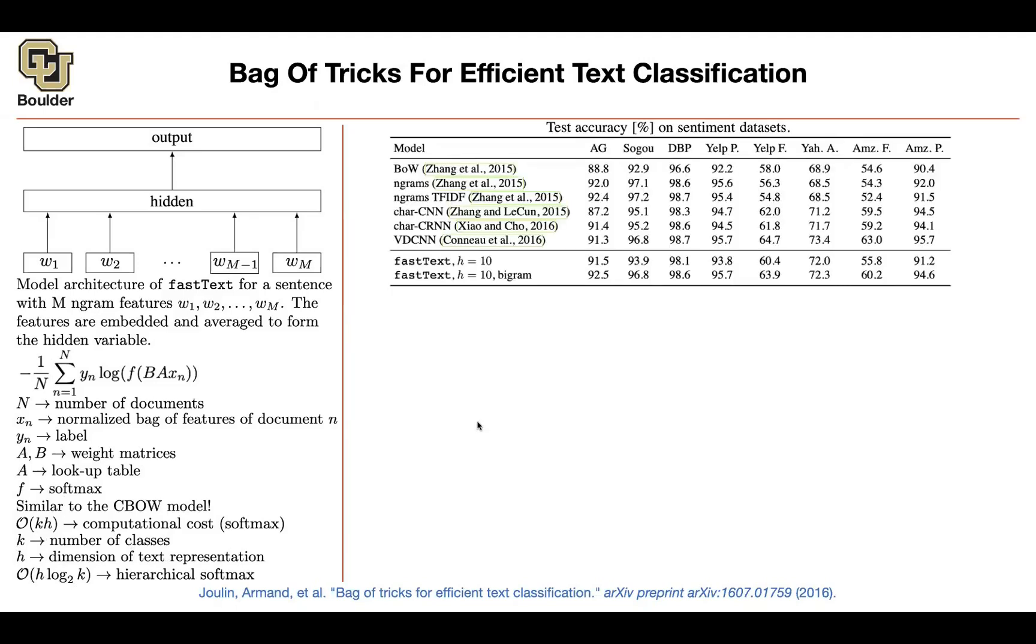And in terms of performance, on multiple sentiment analysis data sets, it is on par with nonlinear models, such as CNNs or recurrent neural networks. And as I said, you can only include words. And that's going to give you the baseline fast text. Or you can include bigrams as well for your features to featurize your document. See, these numbers are very good. They are on par with the previous state of the art. Comparable to nonlinear models.